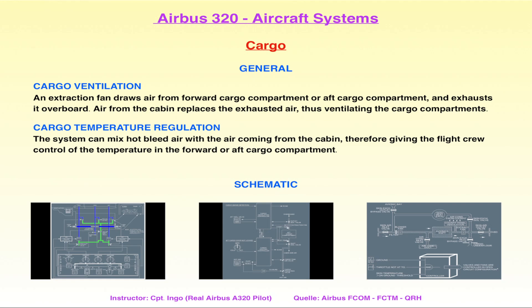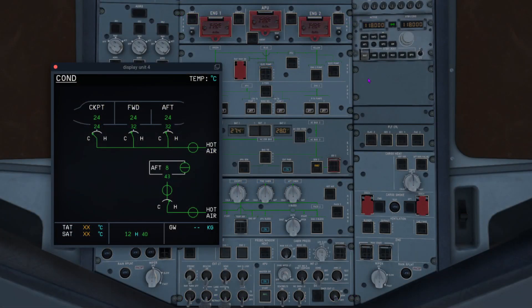Wir schauen uns nochmal die beiden Gepäckräume an: Wie kann man da Durchzug bzw. Ventilation oder Beheizung realisieren? Das Prinzip ist immer das Gleiche, ob wir über Air Condition oder Ventilation sprechen. Wir sehen hier auf der rechten Seite im Overhead Panel das Cargo Heating Panel. Wie das Wort schon sagt, es ist Heating – das hat mit Ventilation erstmal gar nichts zu tun, denn die Ventilation funktioniert im Regelfall sowieso automatisch. Ob das Flugzeug über das Feature der Heizung verfügt oder nicht, ist unterschiedlich: Es gibt Flugzeuge, die haben gar keine Heizung oder nur hinten oder nur vorne.